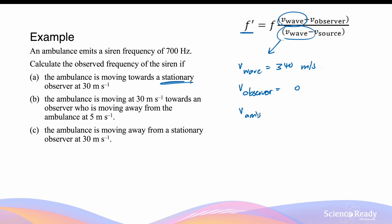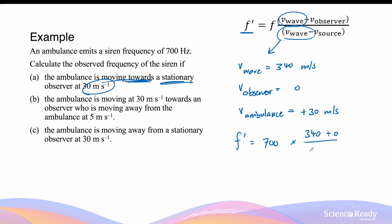The velocity of the source is given by the velocity of the ambulance, since that's what's emitting the sound wave. The speed is 30 m/s, but in the equation we need to determine whether this is positive or negative. Since the ambulance is moving towards the observer, the velocity will be positive 30 m/s. So the observed frequency is equal to 700 Hz multiplied by (340 + 0) divided by (340 − 30), which gives a frequency of 768 Hz.